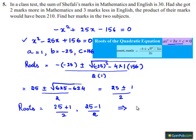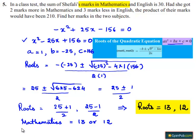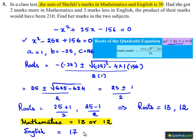The roots are: (25 plus 1) divided by 2 equals 26 divided by 2 equals 13, and (25 minus 1) divided by 2 equals 24 divided by 2 equals 12. So Shefali's marks in Mathematics is equal to 13 or 12. English marks is equal to 30 minus 13, which is 17, or 30 minus 12, which is 18.